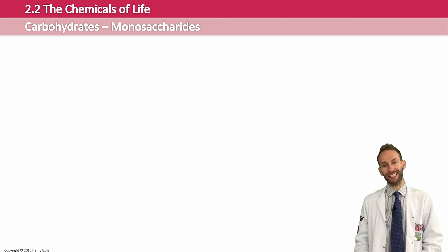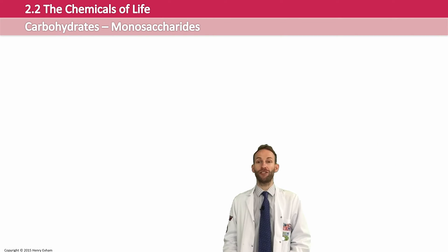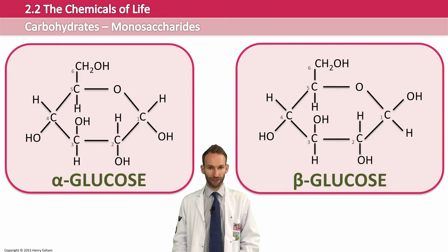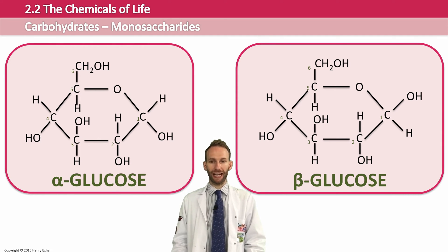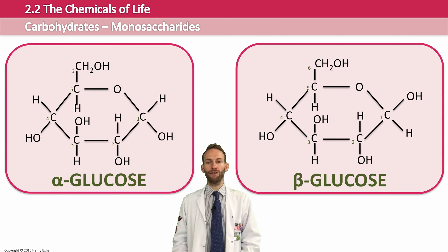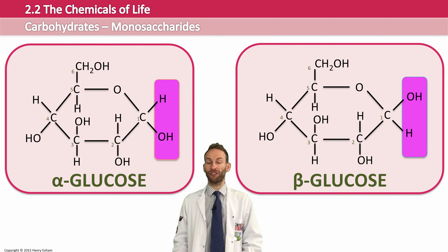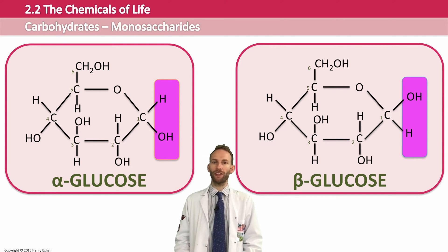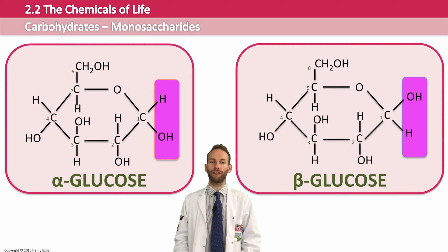Glucose is interesting because it actually exists in two forms, or isomers, and you do need to know both of them. There is alpha glucose and there is beta glucose. If you look at the first carbon, you will see that in alpha glucose it has hydrogen on the top and OH at the bottom, and in beta glucose these are flipped the other way up. This may seem like a very small difference, but it's very important because when glucose forms polymers — when you join lots of glucose molecules together to form polysaccharides — depending on whether you're using alpha or beta glucose, you'll get different polysaccharides with different properties, as we're going to see later on.